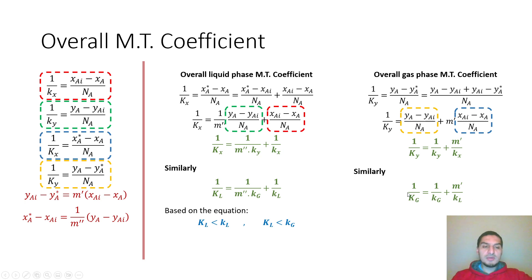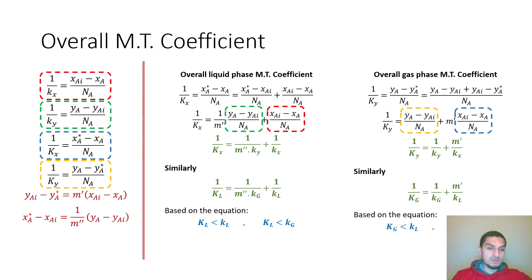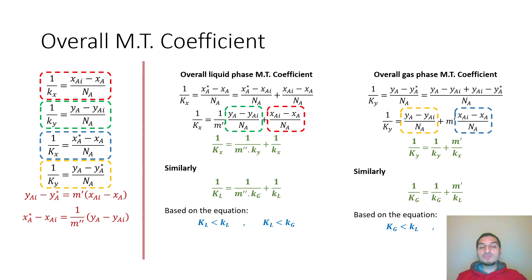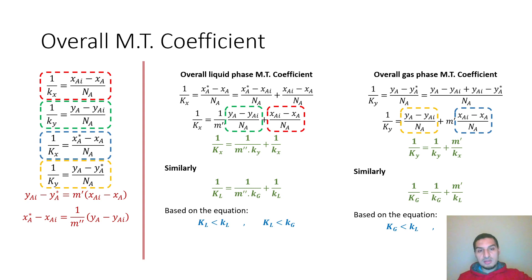Again, the overall mass transfer coefficient must be smaller than the individual coefficient. To use this approach, you need to obtain the slope from the equilibrium curve — get the two points, then calculate m' as Δy/Δx. From m', k_y, and k_x, you can then calculate the overall mass transfer coefficient.